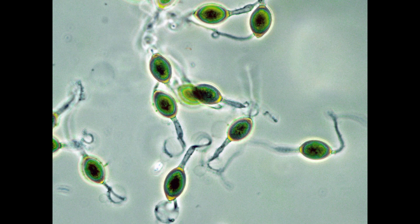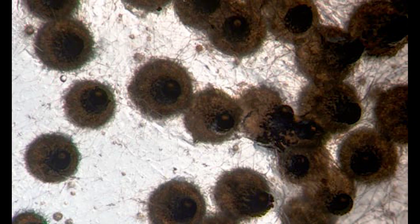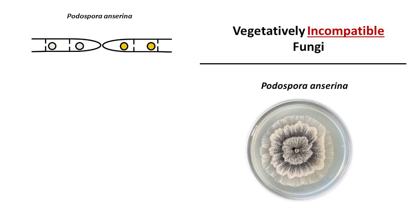Now, let's take a closer look at the processes that take place during heterocarion incompatibility on the example of Podospora anserina. In a hyphal colony, cells engage in cell-to-cell communication and undergo chemotrophic growth toward each other until they make physical contact.